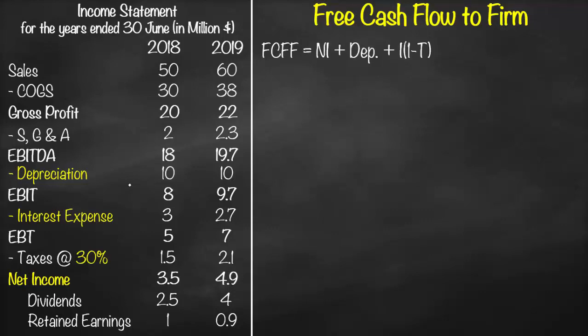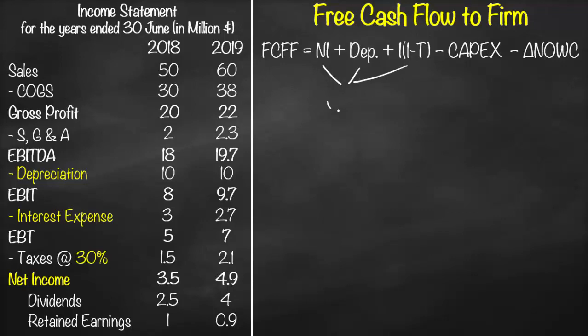For any firm to stay in business as an ongoing concern, it needs machines and equipment, so we subtract capital expenditure (capex). Also, for any firm to keep operating it needs raw materials, which is why we subtract the change in net operating working capital. So our formula includes net income, depreciation, and interest from the income statement.